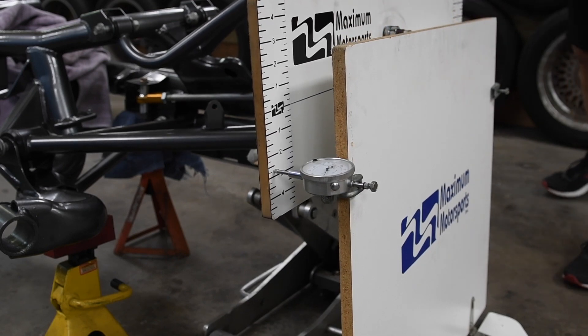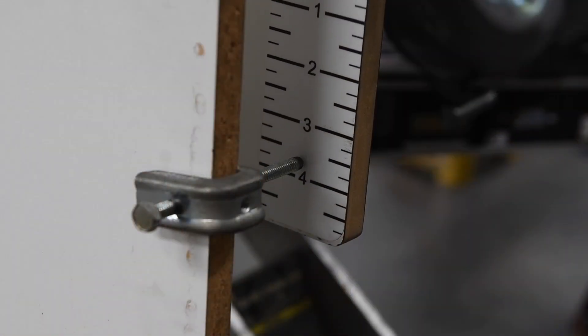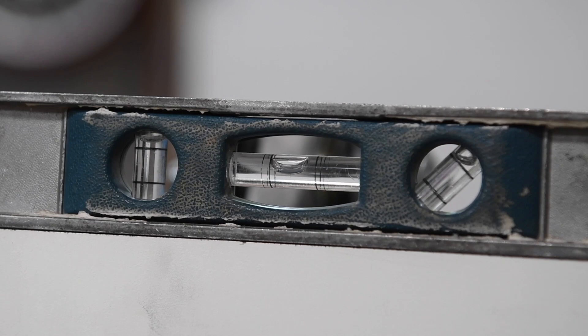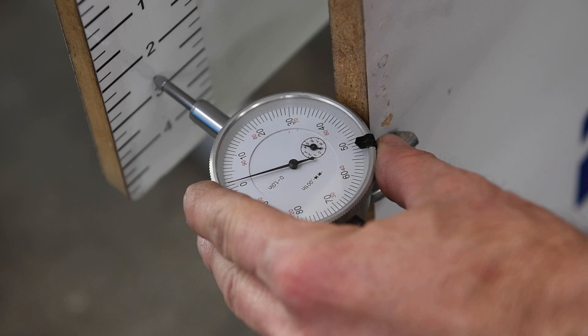Jack up the hub to maximum bump travel. It's important that at every measuring step you make sure the hub board is level. This equalizes the measurements on either side of the board, and makes sure that it's the same from one measurement to the next. Then zero the dial indicator.